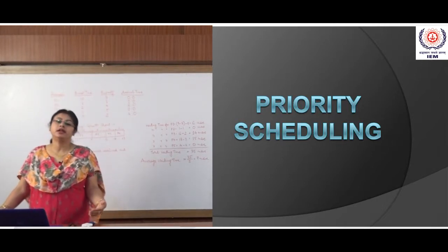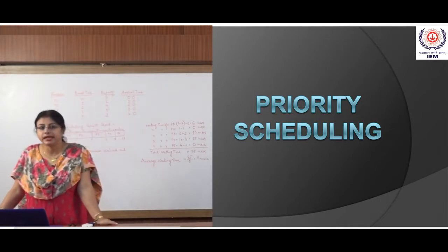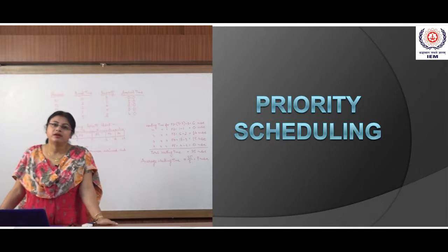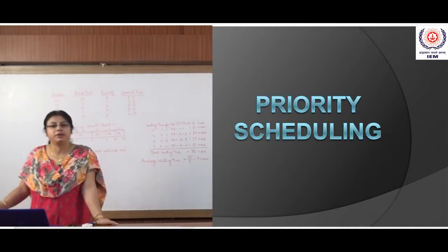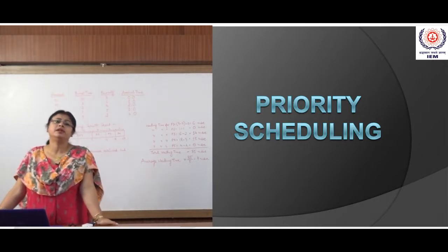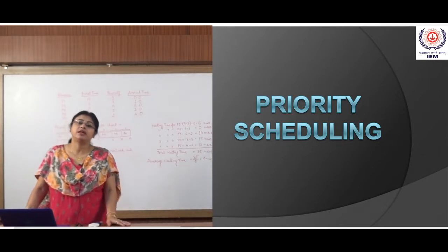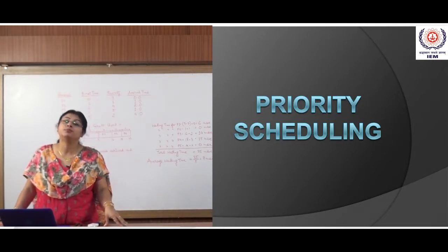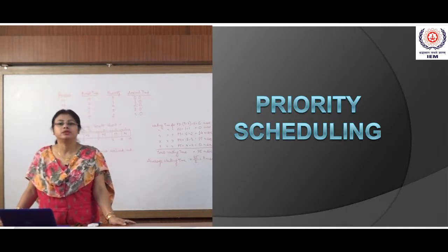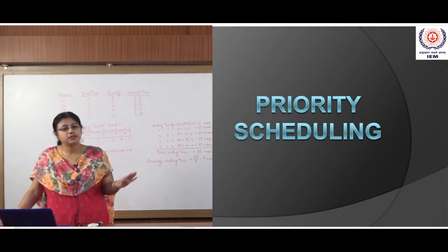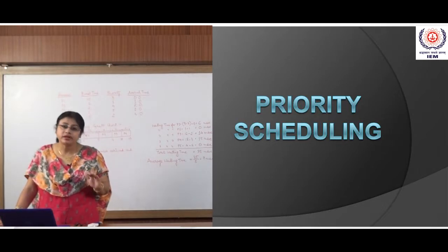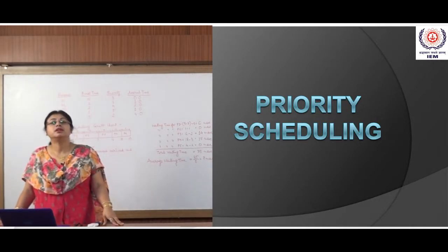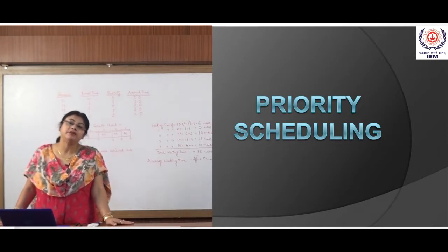Just recapitulating what we have done in our previous classes: we have seen the SJF or shortest job first scheduling algorithm. We have seen that SJF is either preemptive or non-preemptive in nature. When SJF is non-preemptive, a new process starts and will come out from the CPU when it completes its execution. The process which has the shortest burst time is selected, sent to the CPU, executes there, completes its execution, then comes out. After that, the next process with the shortest burst time is selected.